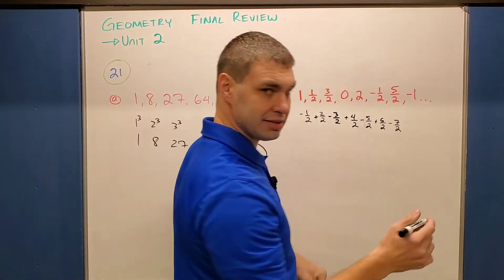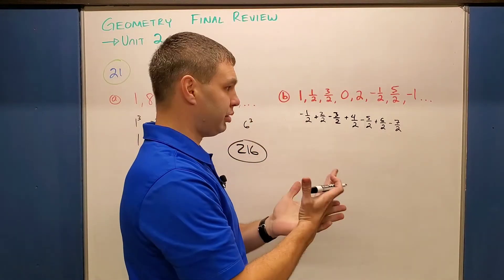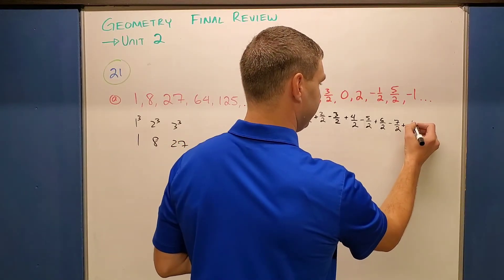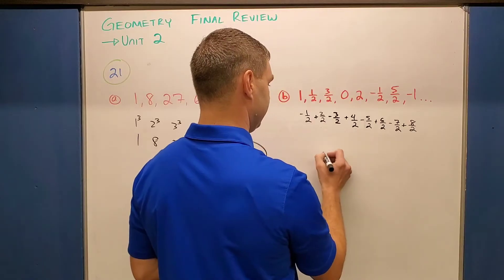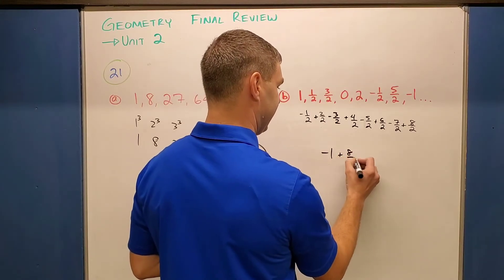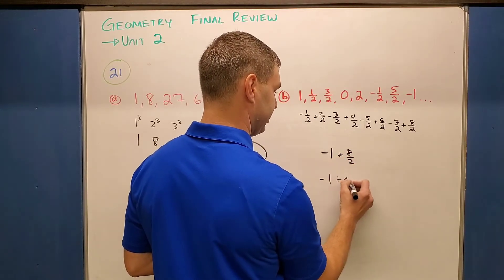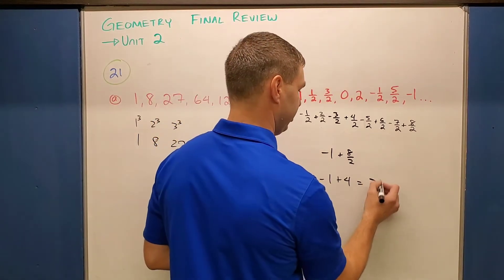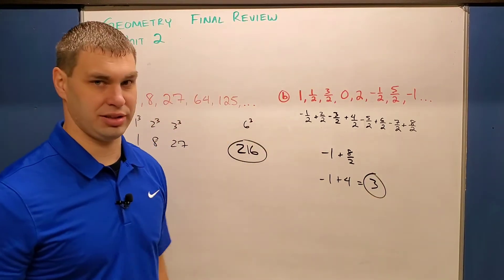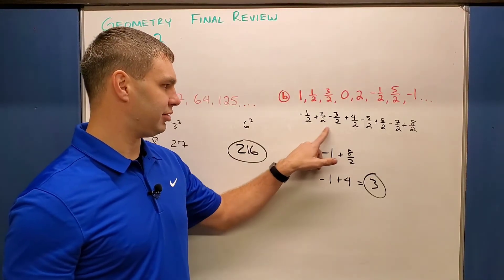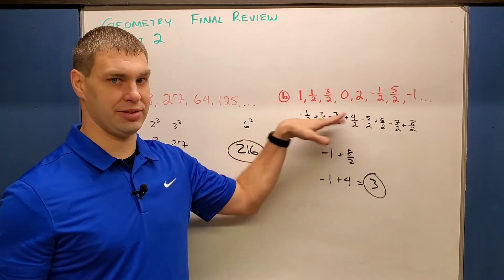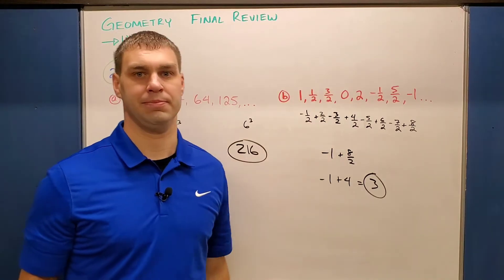And so for my next number in this series or sequence would be to add, and that'd be 8 halves. Well, -1 plus 8 halves is the same thing as -1 plus 4, which -1 plus 4 would be 3. So the next number in this pattern is actually 3, but it follows this plus, minus, plus, minus, 1, 2, 3, 4, 5 on the top, all halves on the bottom.